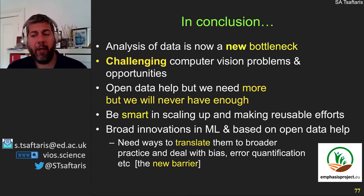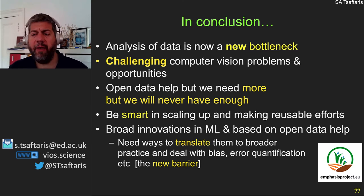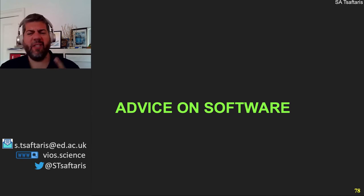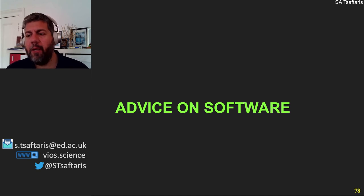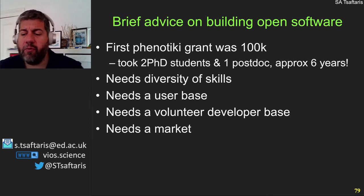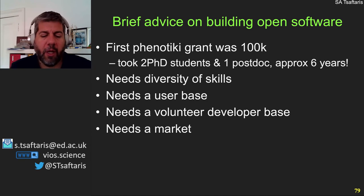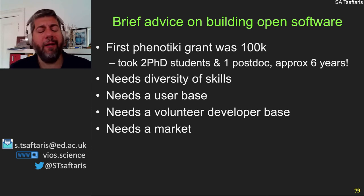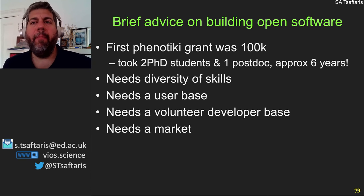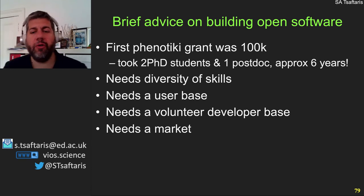This concludes the part about Phenotyky and phenotyping in general. The next part gives brief advice on software design and how to create sustainable software. I didn't expect this when I started this work: building software is totally different than building an algorithm or a paper. The first Phenotyky grant was only 100,000 euros, but in reality it took two PhD students and one postdoc six years to develop — more like five times the original grant cost, with a lot of personal and institutional investment.